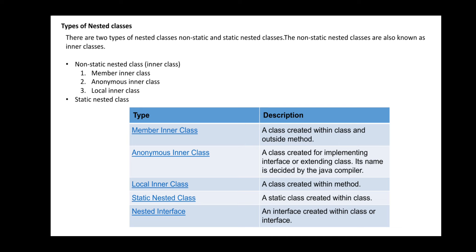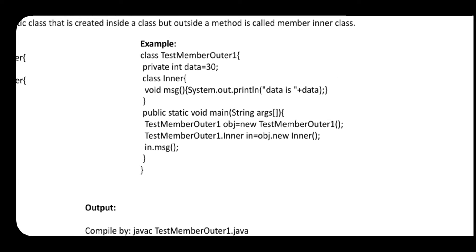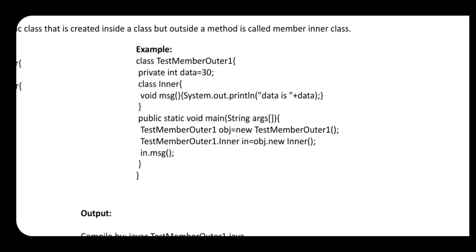The first three types — member inner class, anonymous inner class, and local inner class — are non-static nested classes. Static nested class and nested interface are the two static nested classes. Non-static nested classes refer to the outer class but do not utilize static members, whereas static nested classes both refer to and utilize everything within the class. For example, a non-static class created inside a class but outside a method is called a member inner class. Here we have a class TestMemberOuter which has a private int data equal to 30.